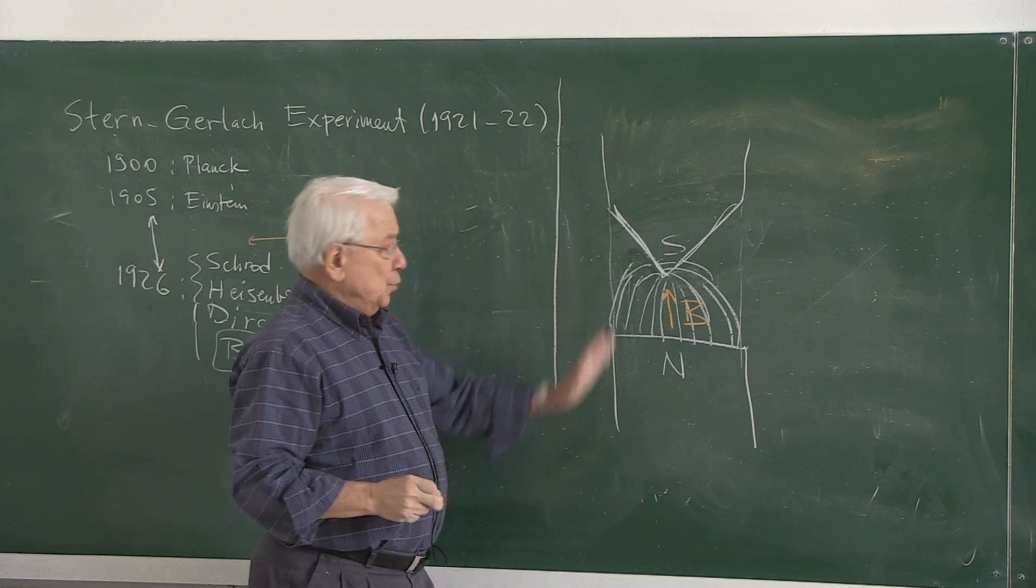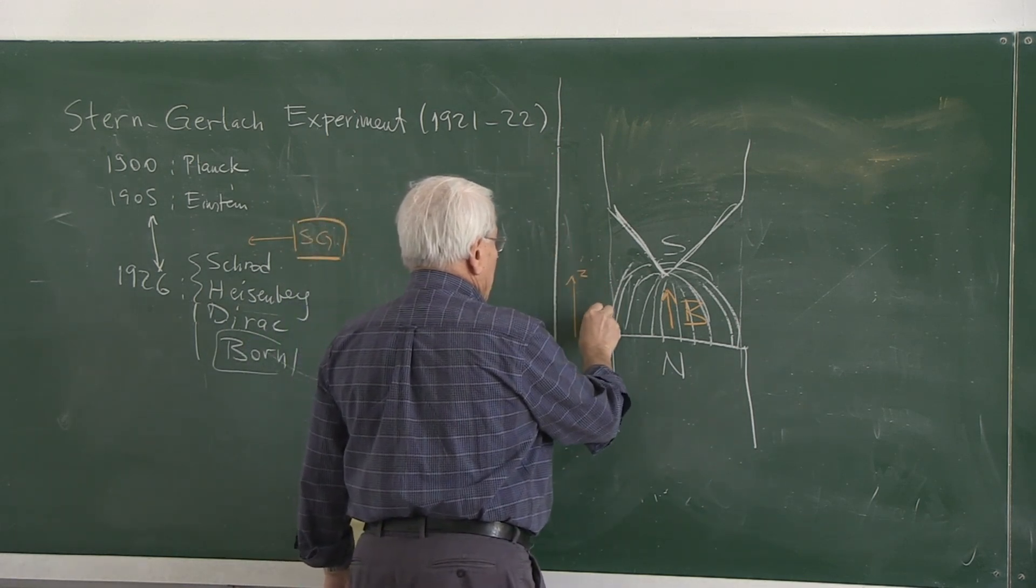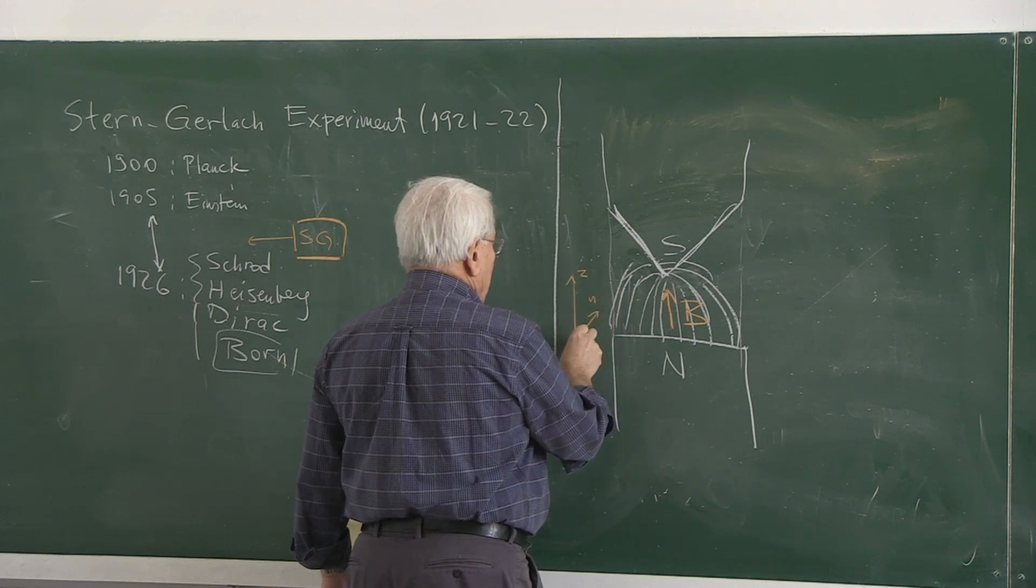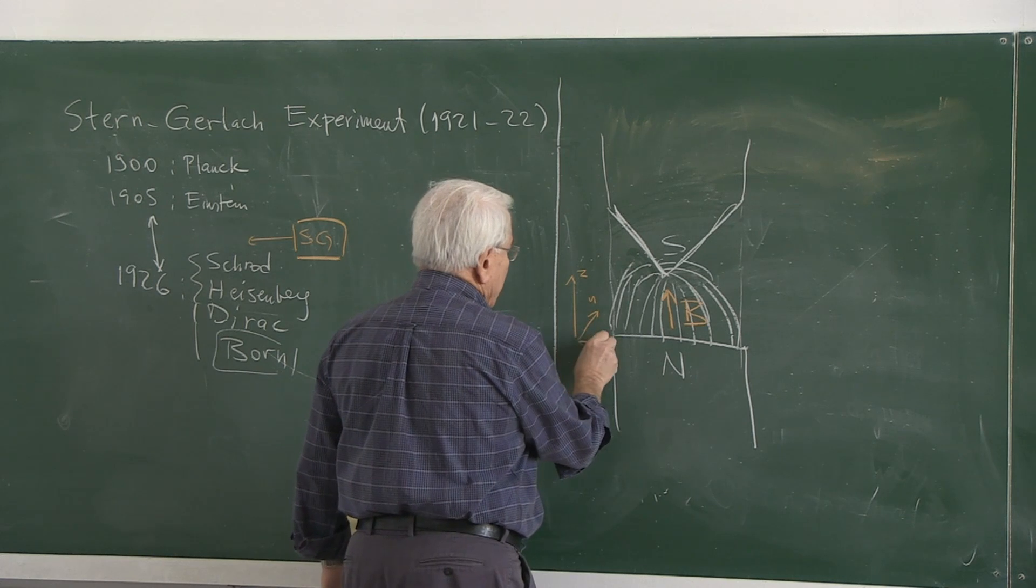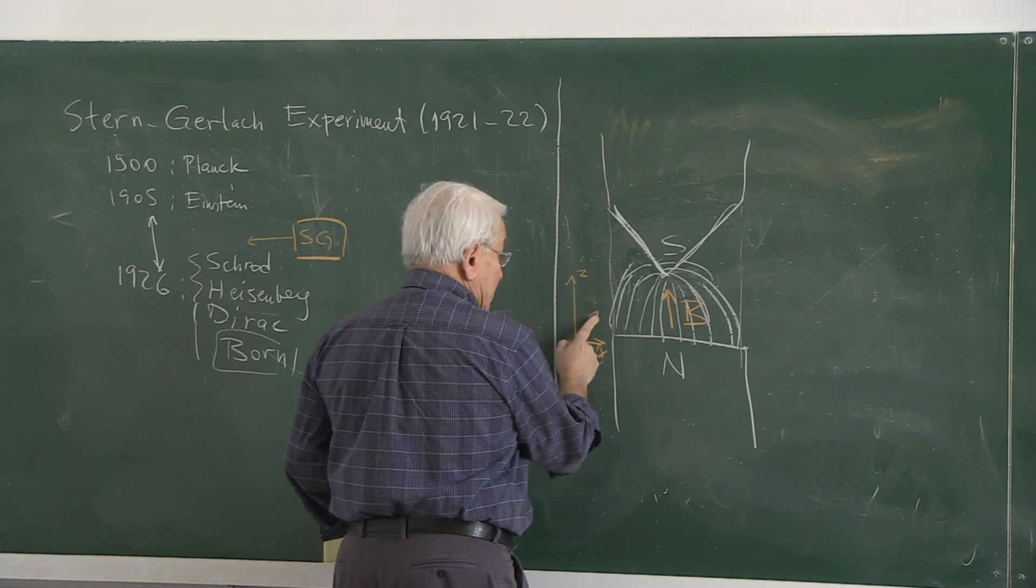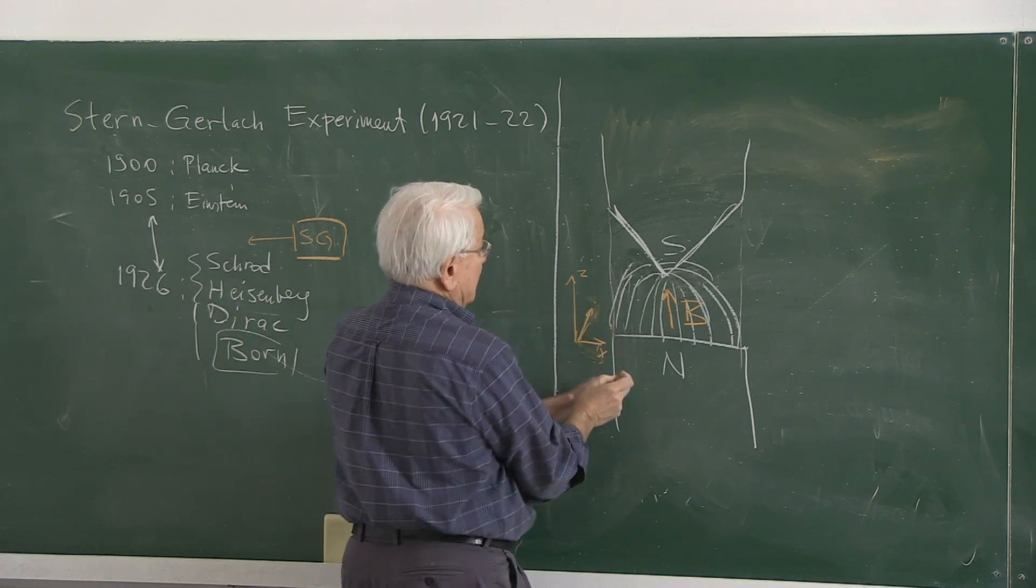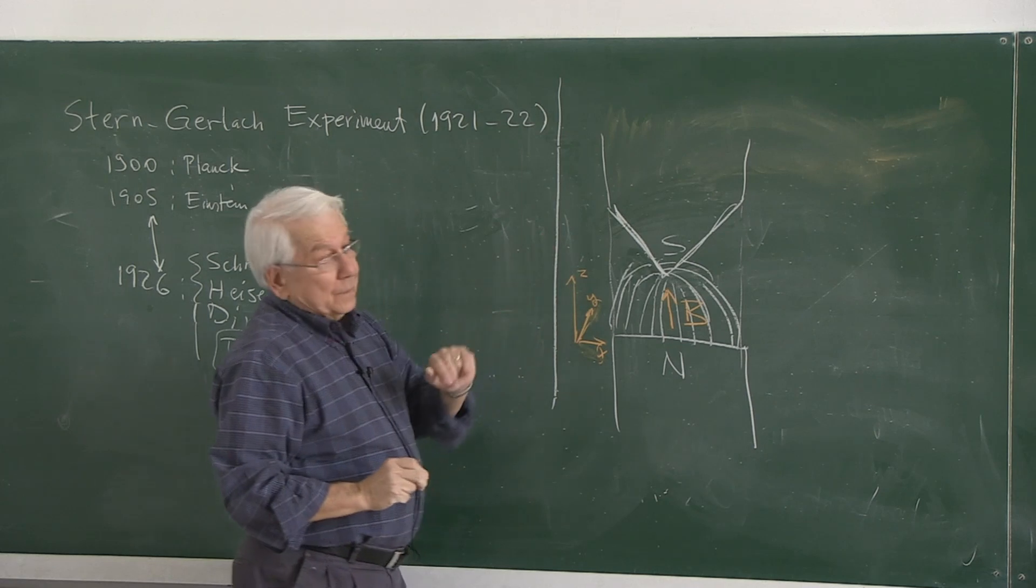If we take this to be the z direction, for example this could be the y and this could be the x here. Why is this way, inside? Let's use that direction.